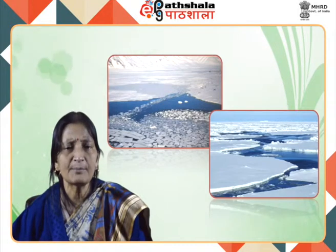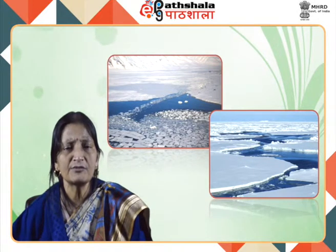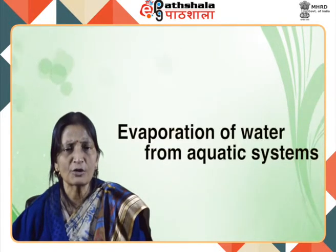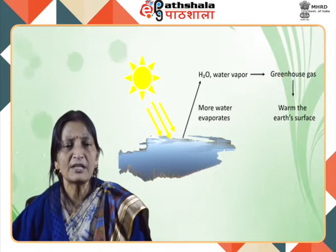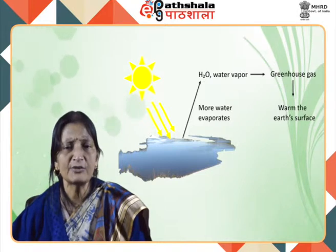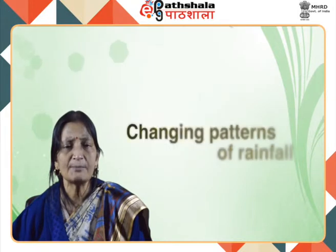If the Arctic ice cap begins to melt, Greenland, Iceland, Norway, Sweden, Finland, Siberia and Alaska would be adversely affected. Global warming will also cause more water to evaporate from aquatic systems, creating more water vapour which is itself a greenhouse gas, further enhancing warming. There will also be large shifts in agricultural productive areas due to changes in rainfall patterns.